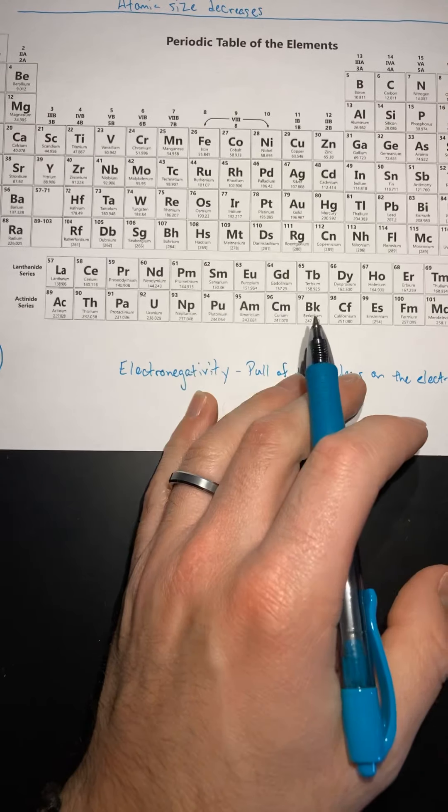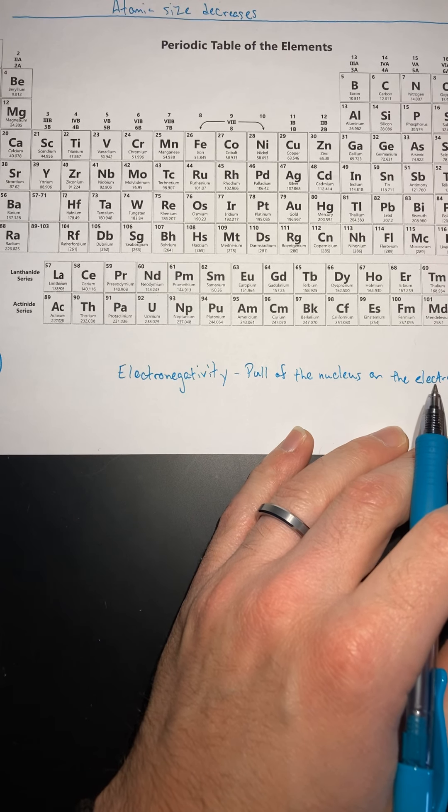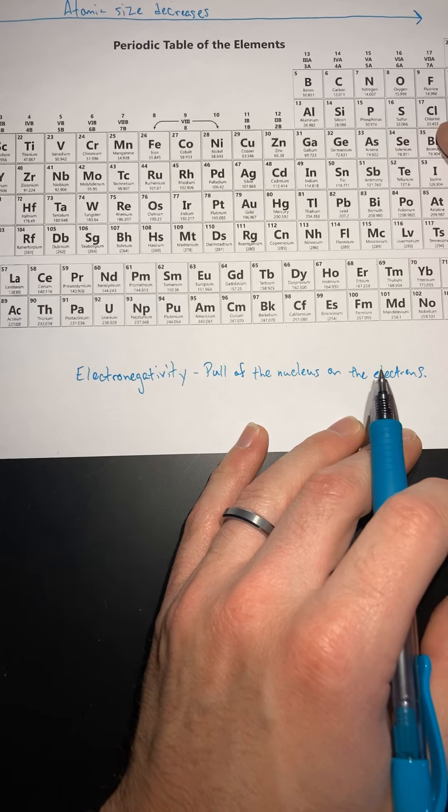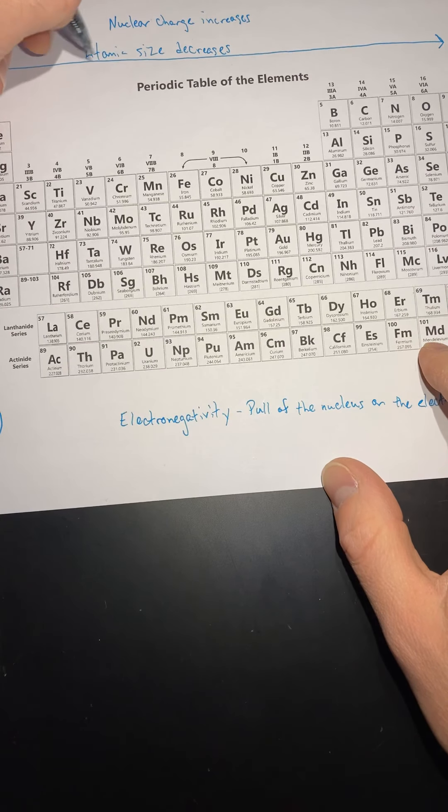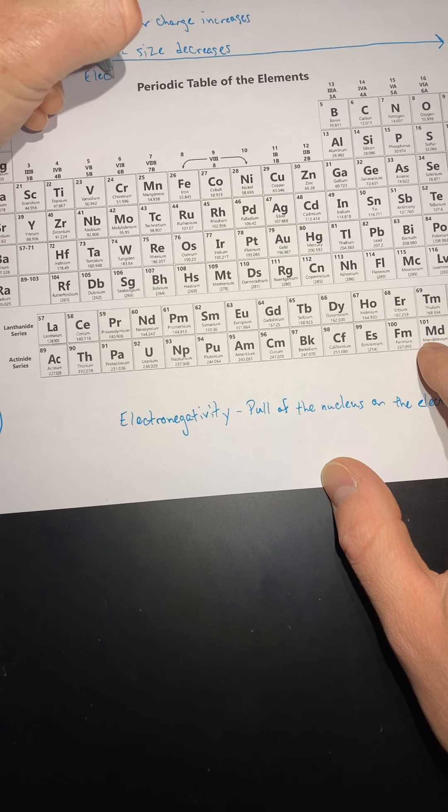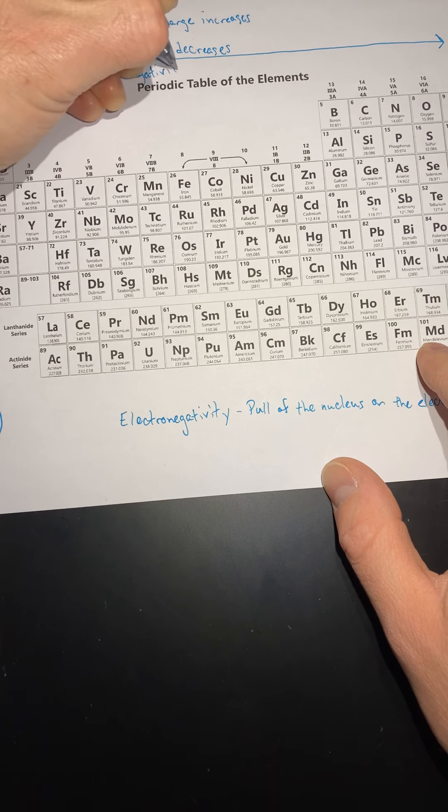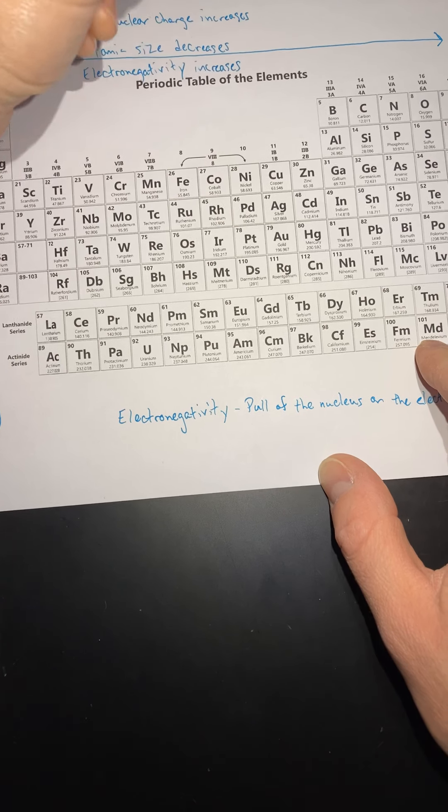Do you think this is going to be high electronegativity or low electronegativity? It's going to be high because the nuclear charge is really high over here. So, although atomic size decreases going in this direction, electronegativity increases. Okay.